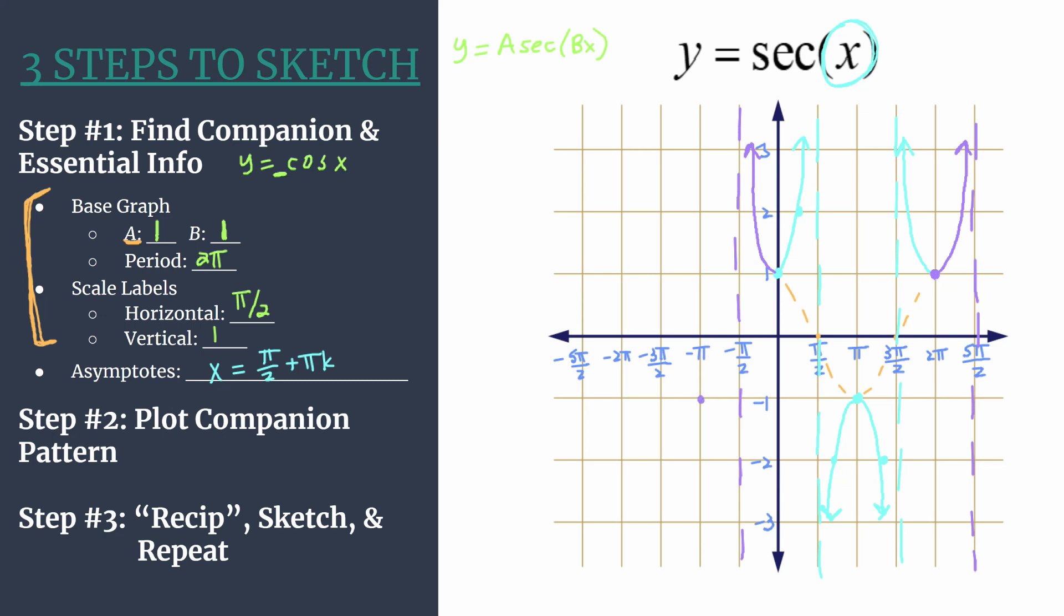Okay, we'll have a local maximum here with this part of a secant curve. Another asymptote will happen at negative three pi over two. A local minimum here sets this curve, and another asymptote at negative five pi over two. So you can see it just repeats the pattern over and over and over again.